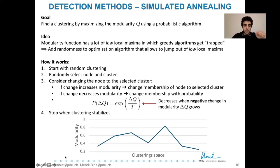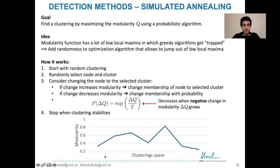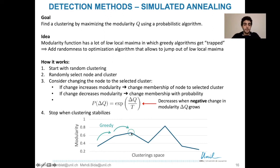Here is an illustration. The different clusterings are shown such that neighboring clusterings differ by one node move. A greedy algorithm starts at some clustering, moves to neighbors that increase modularity, and gets stuck at a local maximum — which may not be the best reachable maximum. The simulated annealing approach follows the same path initially but can move to lower-modularity states with some probability, escaping the local trap.